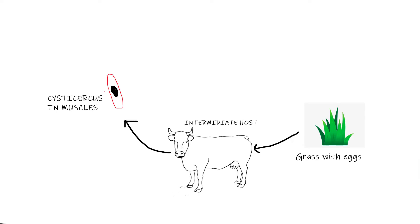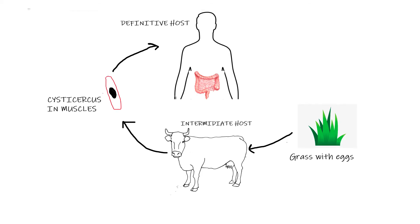A human gets infected if he eats undercooked or even raw meat. If this meat is cooked right, then it's alright — he won't get infected.